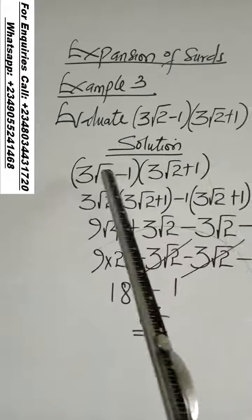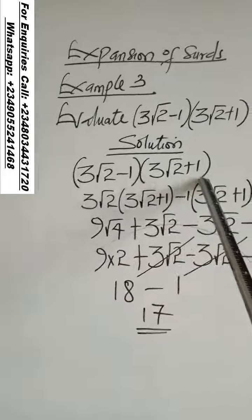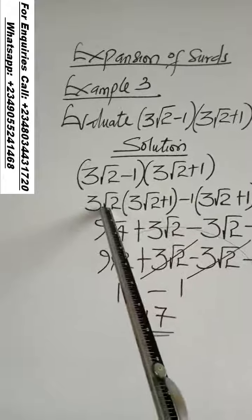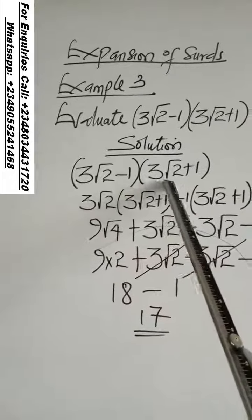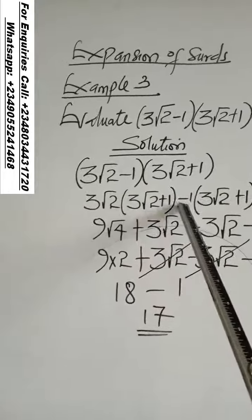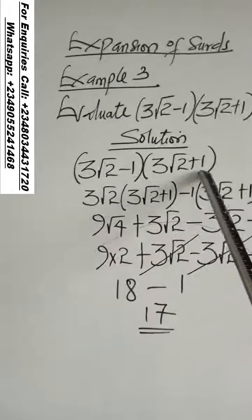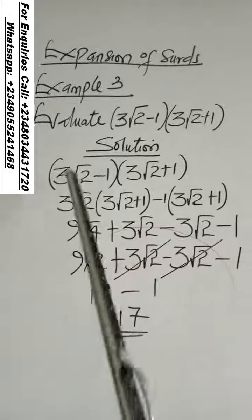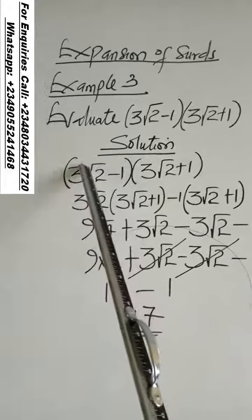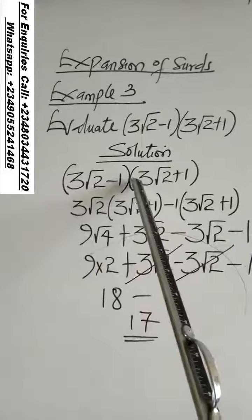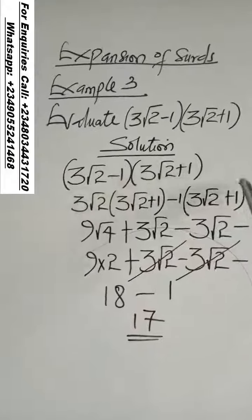So, let's go. 3√2 will multiply everything inside this bracket to give you 3√2 times everything inside this bracket. Minus, that is this minus, 1 will multiply everything as well. So it means the content of the first bracket will multiply everything in the second bracket.